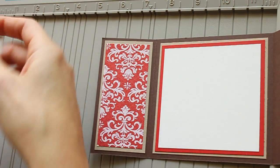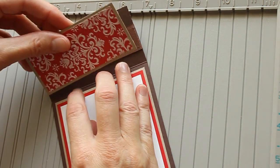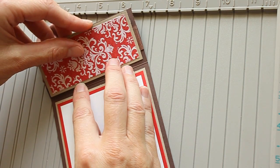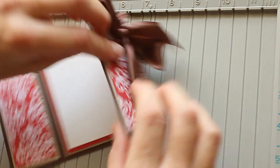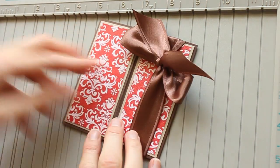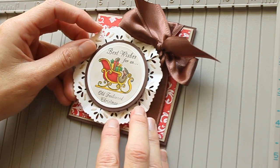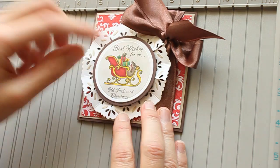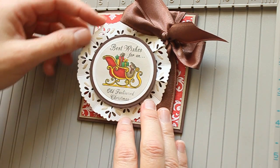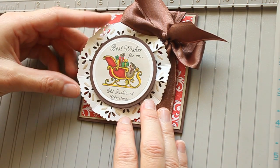Now, we're coming to the closure of the card. You could just decorate the front and be done. I usually add an image, and I want to show you real quick how I made this pleated background circle.